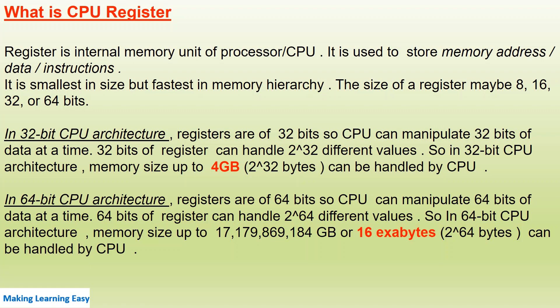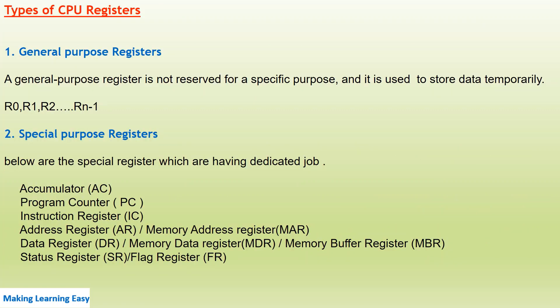Now let's see the types of CPU registers. There are mainly two types: general purpose registers and special purpose registers. General purpose registers don't have any specific purpose — they can be used to store data, instructions, or any address. The naming convention is normally R0, R1, R2, and so on.